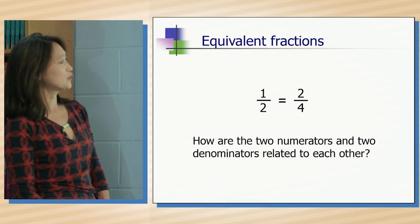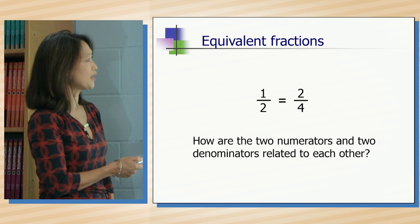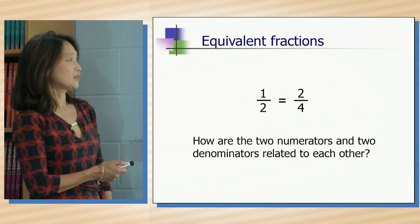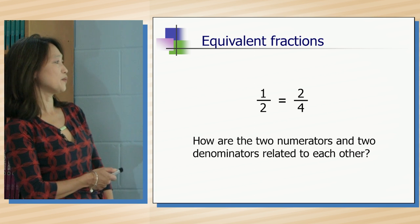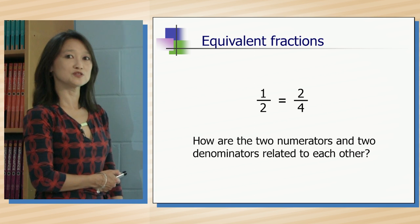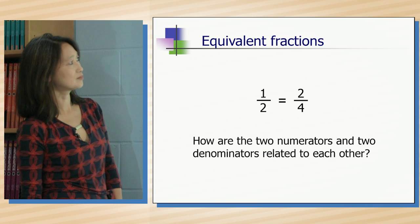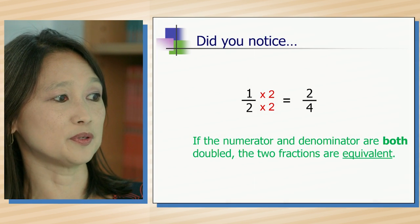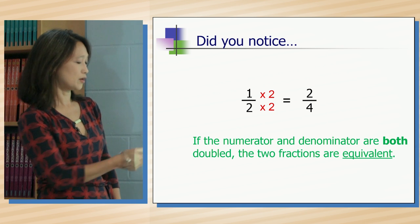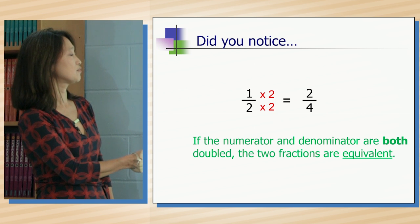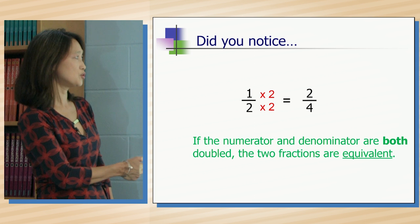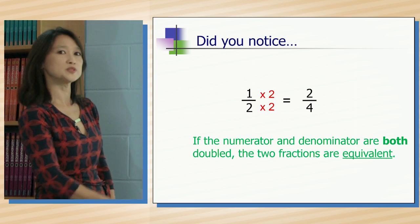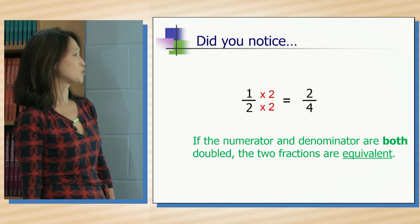If we look at this equation, one half equals two fourths. Let's look at how the two numerators and the two denominators are related. Do you notice anything? If the numerator and the denominator are both doubled, the two fractions are equivalent. The one is doubled to get two, the two is doubled to get four. And there's your new fraction, two fourths, which is the same amount as one half.